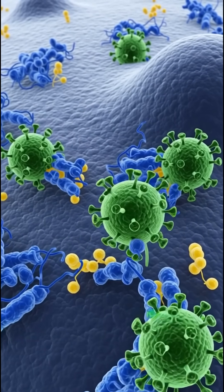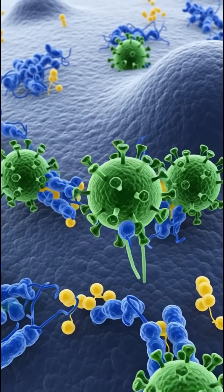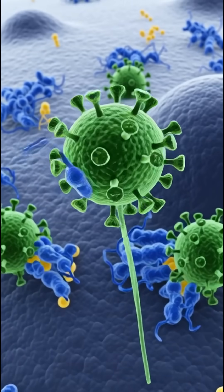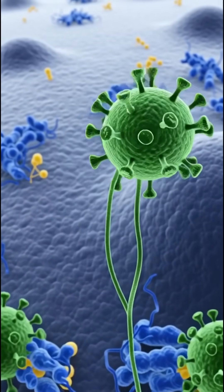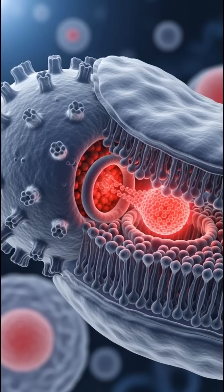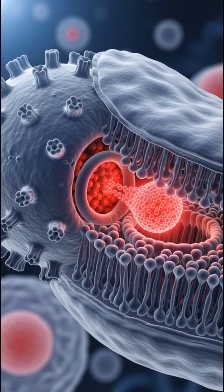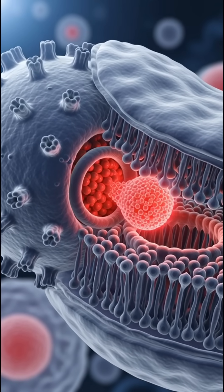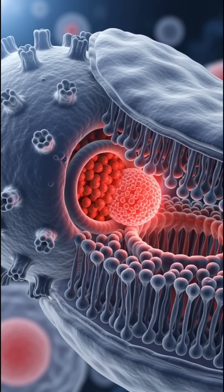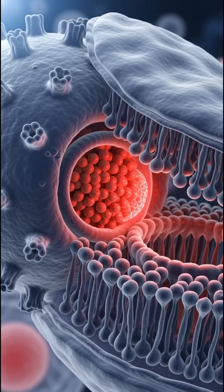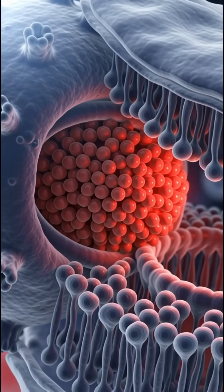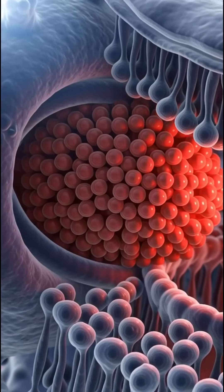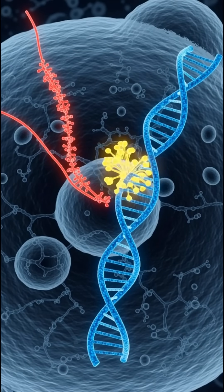Within the lymph nodes, the virus seeks out its primary target, the helper T-cell, a commander of the immune response. HIV specifically recognizes the CD4 receptor and a co-receptor on the T-cell's surface, latching on with precision.